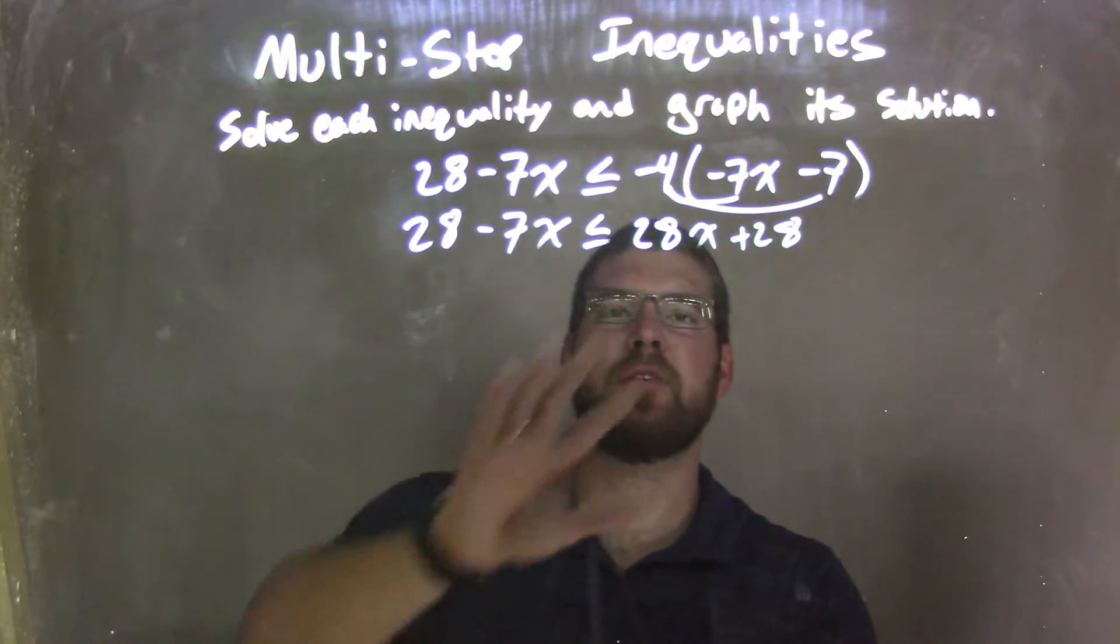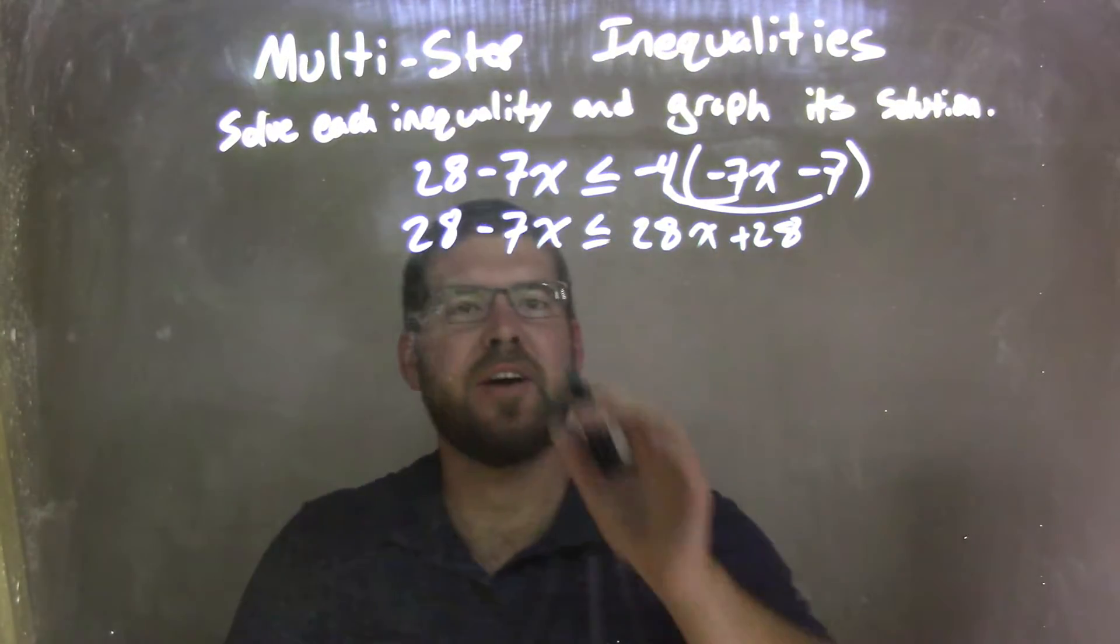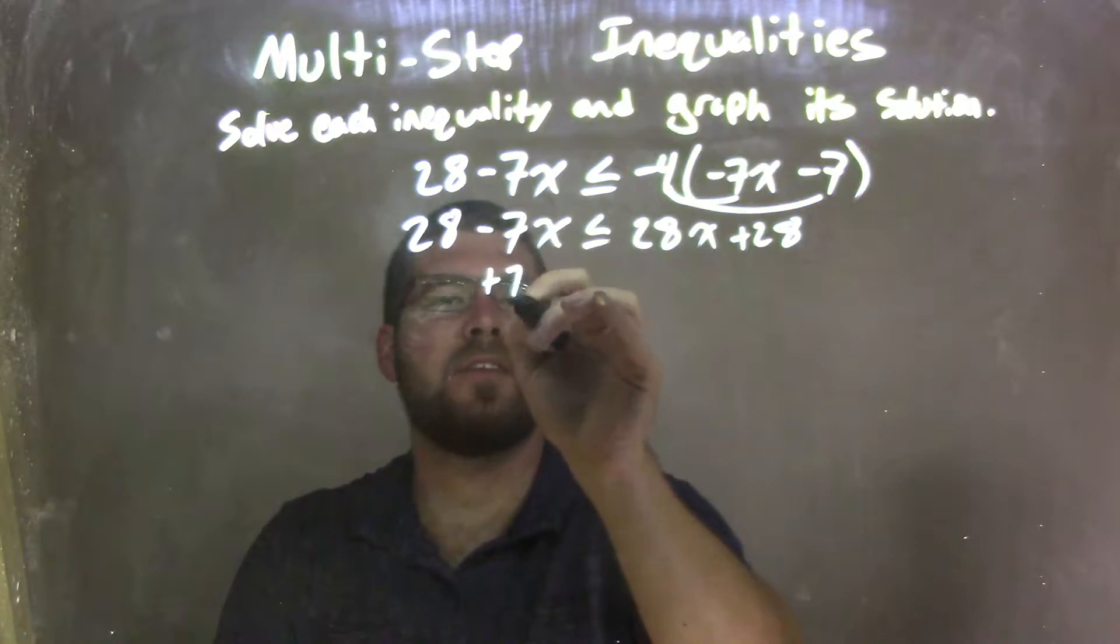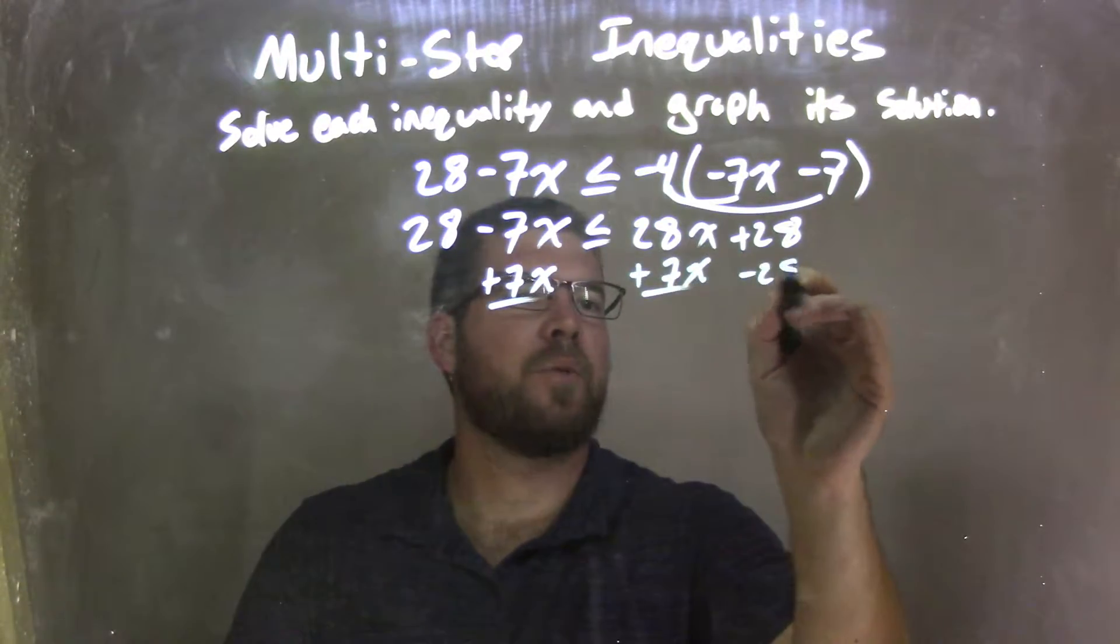So now, I'm going to bring our like terms to the other. Let's bring our x's to one side, our numbers to the other. In this one here, I'm going to bring my x's to the right. So I'm going to add a 7x to both sides and I'm going to subtract the 28 to both sides.